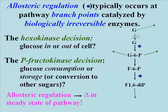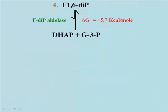Remember that allosteric regulation can cause a change in the steady state of a pathway. In the next reaction, the enzyme fructose diphosphate aldolase splits the 6-carbon fructose 1,6-diphosphate into two 3-carbon molecules: dihydroxyacetone phosphate and glyceraldehyde 3-phosphate.